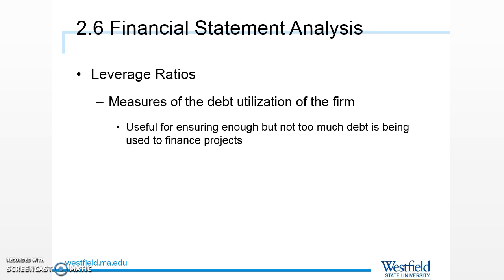Leverage ratios are a measure of how much debt the firm makes use of and how well they're using it. We want to use some debt because there are advantages — it enables us to undertake bigger and better projects or scale existing good projects. For example, if you could buy one book for ten dollars and sell it for fifteen, but instead borrowed ninety dollars, you could buy ten books and sell them at fifteen dollars each, ending up with a hundred and fifty dollars.